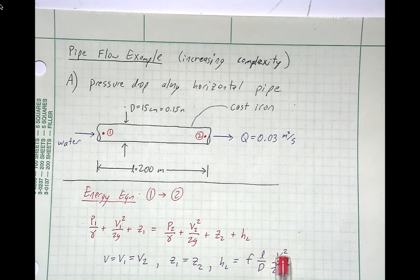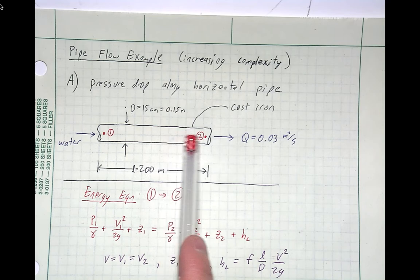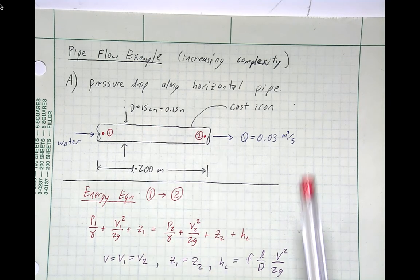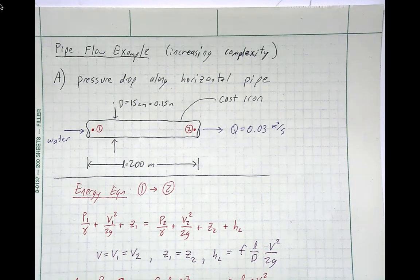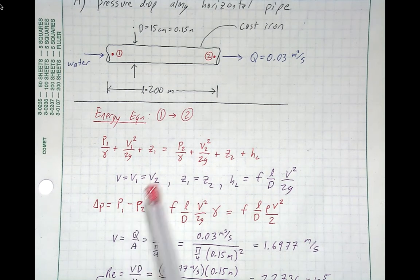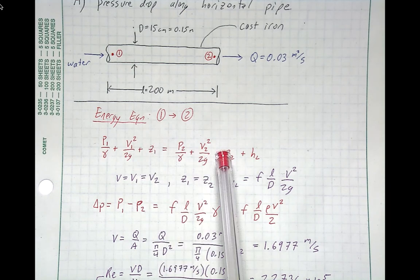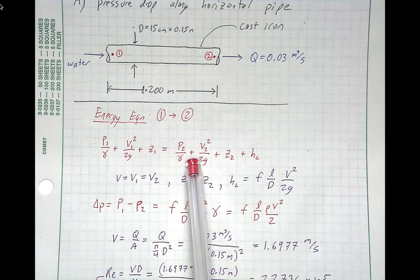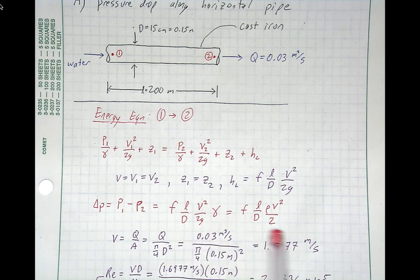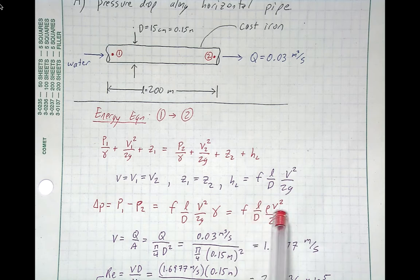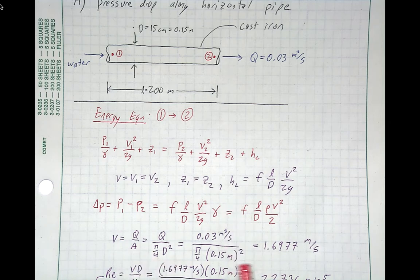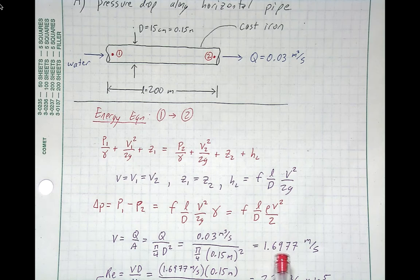The major head loss is just the friction factor times the length-to-diameter ratio times the velocity head. The velocity V is the same throughout the entire pipe section, equal to V1 and V2. After canceling the velocity heads and elevation heads, the pressure drop P1 minus P2 equals the major loss term times gamma. We find velocity from Q over A, where A has the diameter squared, giving a velocity of 1.7 meters per second.